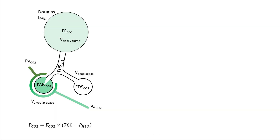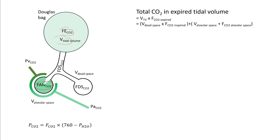When you exhale your air into a balloon — say, for example, a Douglas bag — you can measure the fraction of CO2 in the bag, and you will know the tidal volumes. You can figure out your fraction of alveolar CO2 from your capnogram. The total amount of CO2 in your Douglas bag is your tidal volume multiplied by the CO2 in the expired air, and this will equal the total CO2 in your dead space plus the total CO2 in your alveolar space.